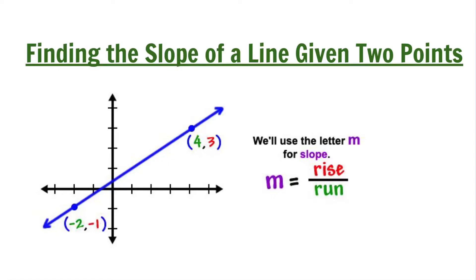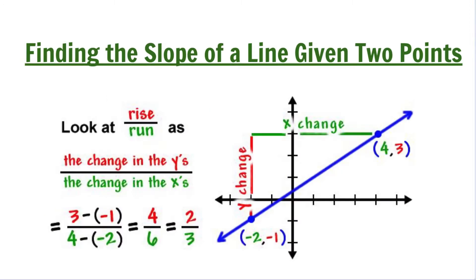The given line passes through the points negative 2, negative 1, and 4, 3. We will use the letter M to calculate for the slope. The slope M can be solved using rise over run, which is the same thing as the change in the y values divided by the change in the x values.